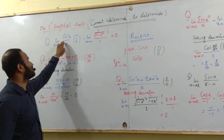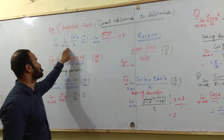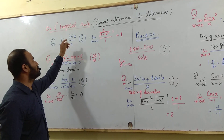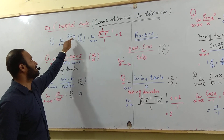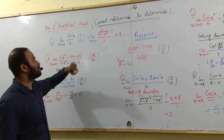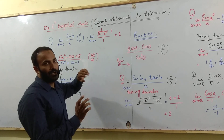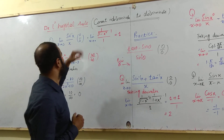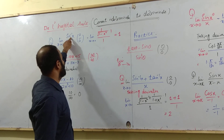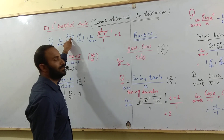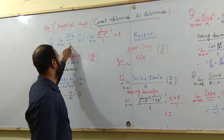The first question is: limit x approaches 0 of sine inverse x divided by x. You can see here, if I put the limit, we get 0 over 0 form. According to the rule, take the derivative of the numerator and then take the derivative of the denominator.